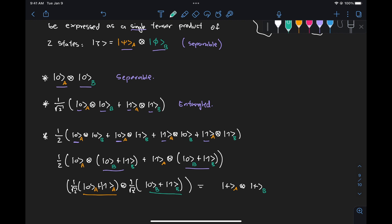And this is just basically equal to the state plus tensor plus. So clearly we can see here that this is a separable state, right? Because now we have turned this into a single tensor product for something that describes A and something that describes B.